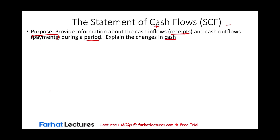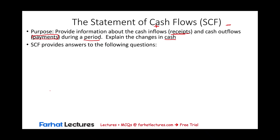What happened to your cash? Did it go up or did it go down? And for what purpose — why? The cash flow statement helps provide answers to very important business questions, such as: what are the sources of our cash? Where is cash coming from? A company can generate cash through revenues when they make sales. They can bring in cash through equity by selling stocks, or they can sell debt or bonds. Those are the three main sources of cash: revenues, equity, and debt.